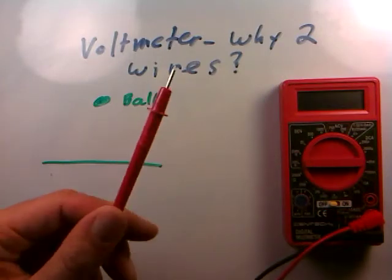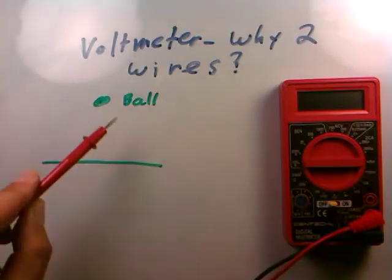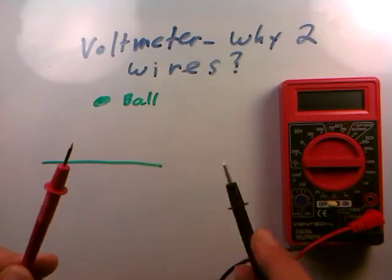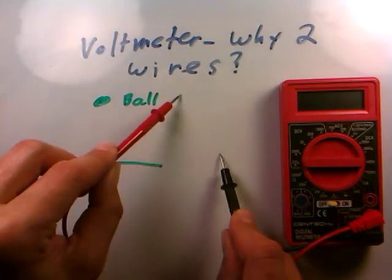Why can't we just do it all with the red? You can certainly use one to touch different areas of the circuit to make a measurement. Why two? Why do you have to hold the other one somewhere while you make one of the other measurements?